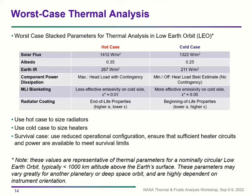At Goddard, which frequently deals with Earth science instruments, worst case stack parameters for thermal analysis in low Earth orbit include hot case and cold case parameters. For the hot case, use the hottest environmental parameters and maximum heat load with contingency. For the cold case, use coldest environmental parameters and best estimate heat load with no contingency. For MLI blanketing, use less effective emissivity on the cold side for the hot case and more effective emissivity for the cold case. Use BOL properties for radiator coatings in both cases; use the hot case to size radiators and the cold case to size heaters.